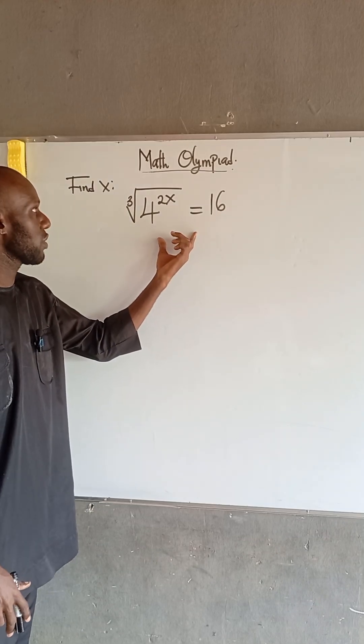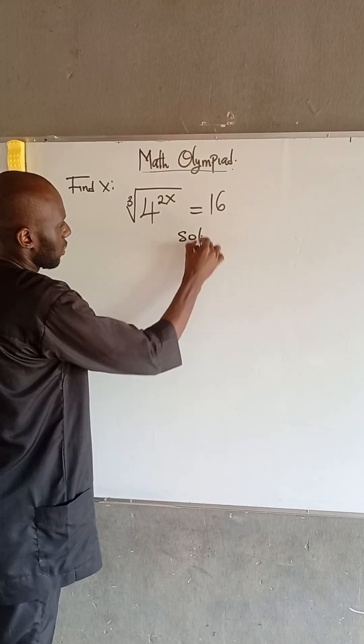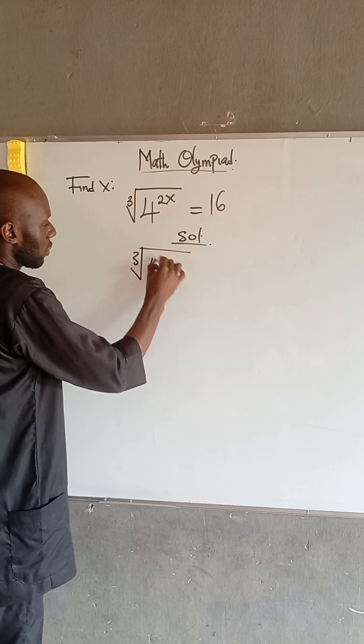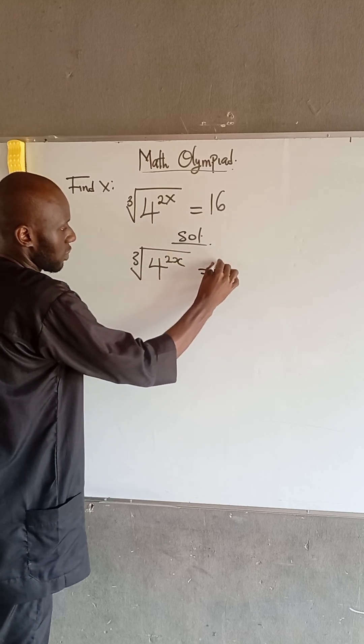We are asked to find the value of x in this equation. We have that the cube root of 4 to the power of 2x is equal to 16.